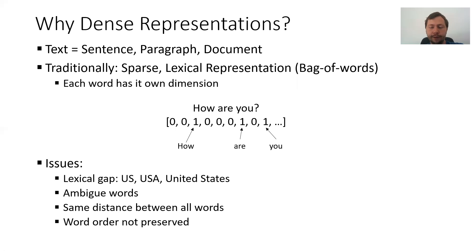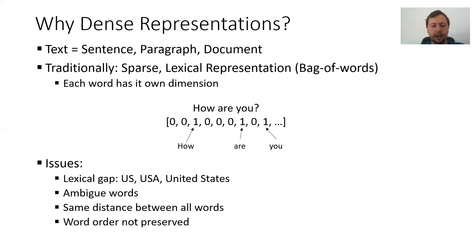The second issue is ambiguous words. For example, the word 'apple' — sometimes it means the fruit, sometimes it means the company, but with such a sparse representation you have no way to differentiate if you mean the company or the fruit. Further, in such a representation the distance is the same between all words, so between the word 'dog' and 'cat' you have the same distance as between 'dog' and 'car'. Also, the word order is not preserved — so 'I want to travel from Germany to the US' versus 'I want to travel from the US to Germany' cannot be differentiated with a sparse lexical representation.